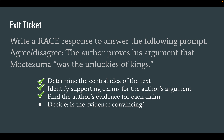Now it's time for you to decide. We've determined a central idea, we've found supporting claims and evidence for each of those claims. Now it's your time to bring all of this together and put it into a paragraph. Answer this question — agree or disagree: the author proves his argument that Moctezuma was the unluckiest of kings. The strongest responses will have two pieces of evidence and explain for each piece why it's convincing — how does that evidence prove this argument? Or, if you disagree, what did the author not include that would have fully proved it? Great work today, and we'll pick up more on this topic tomorrow.